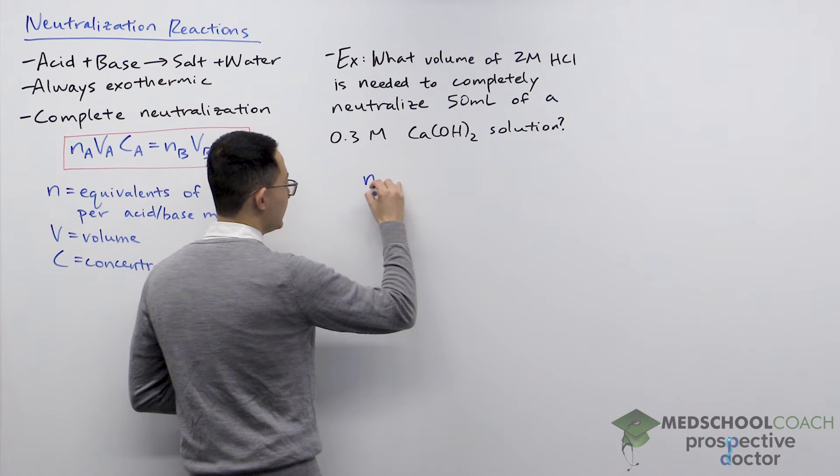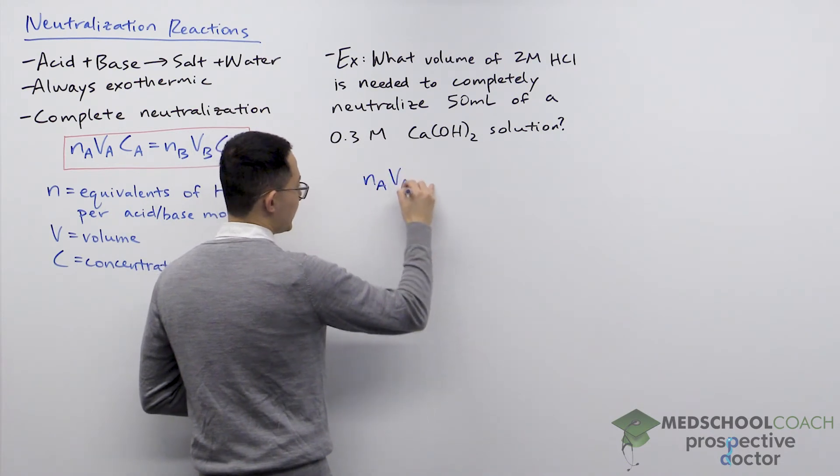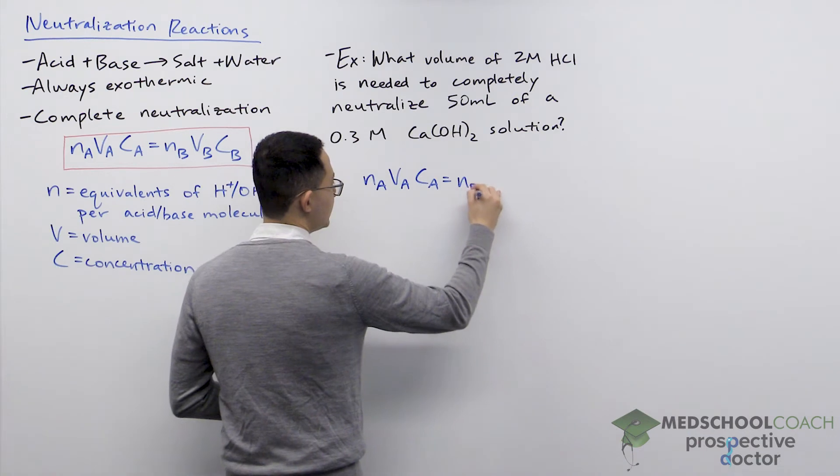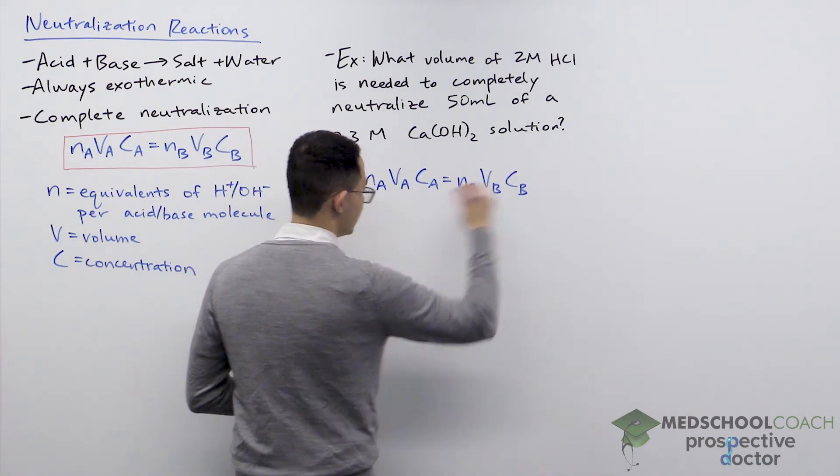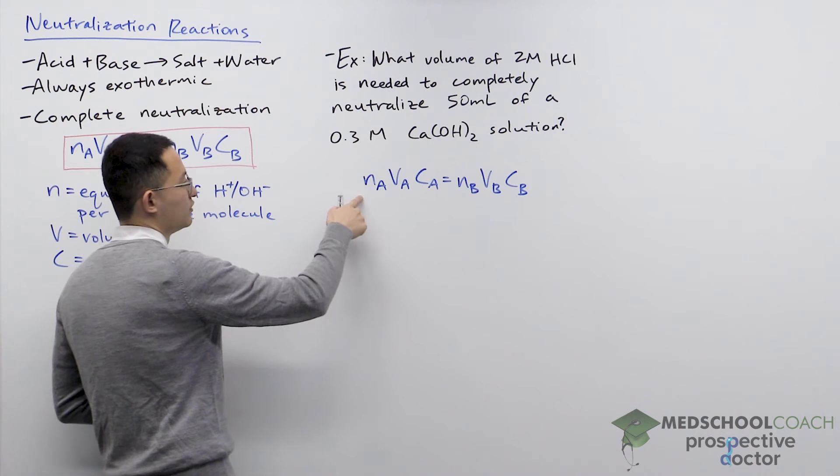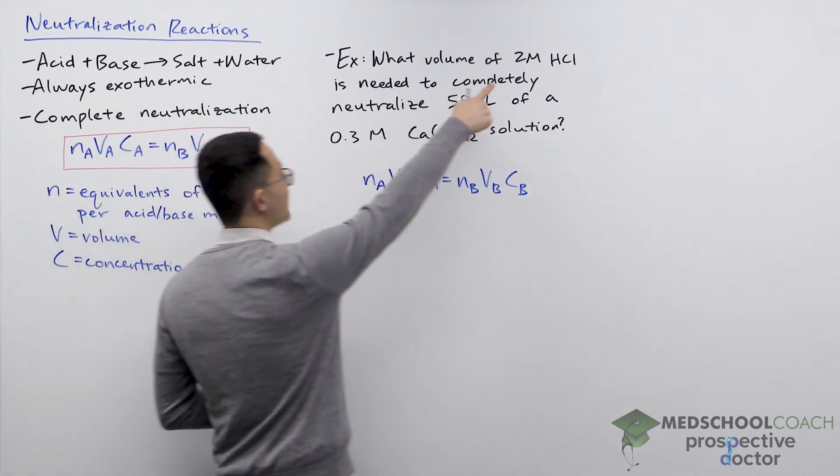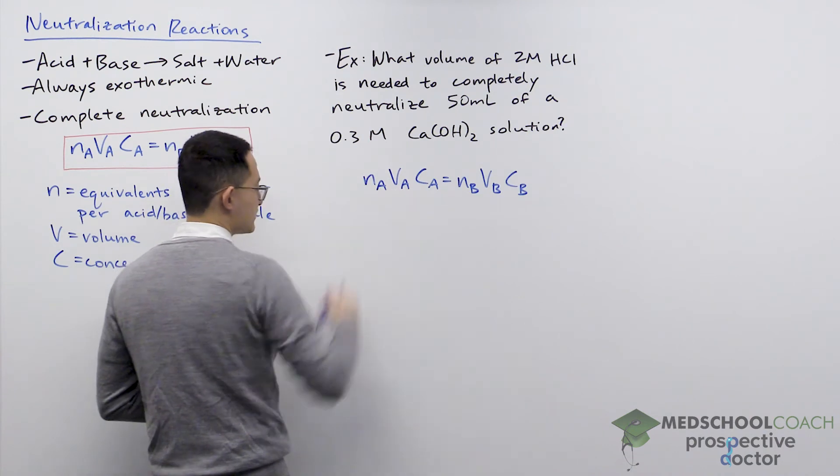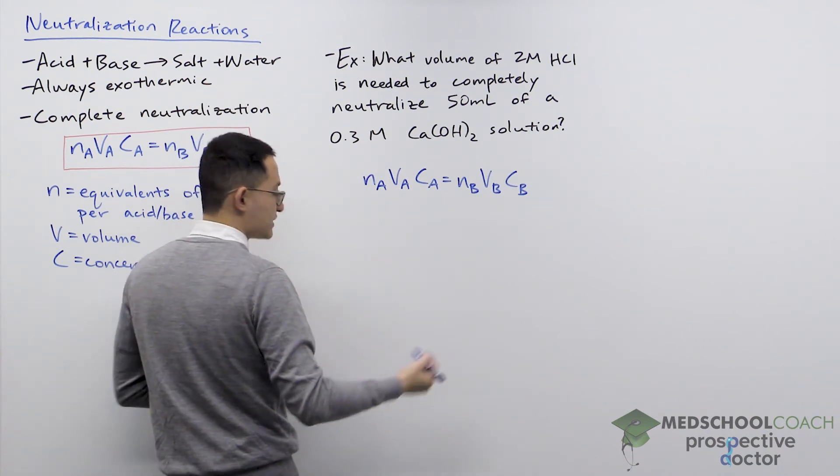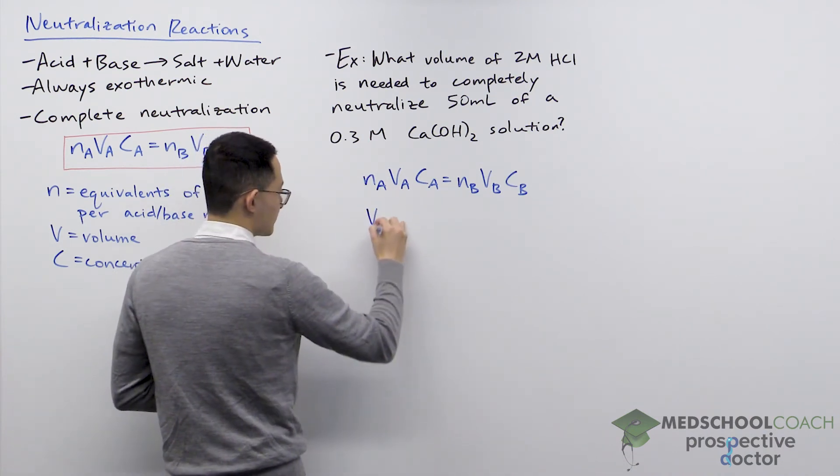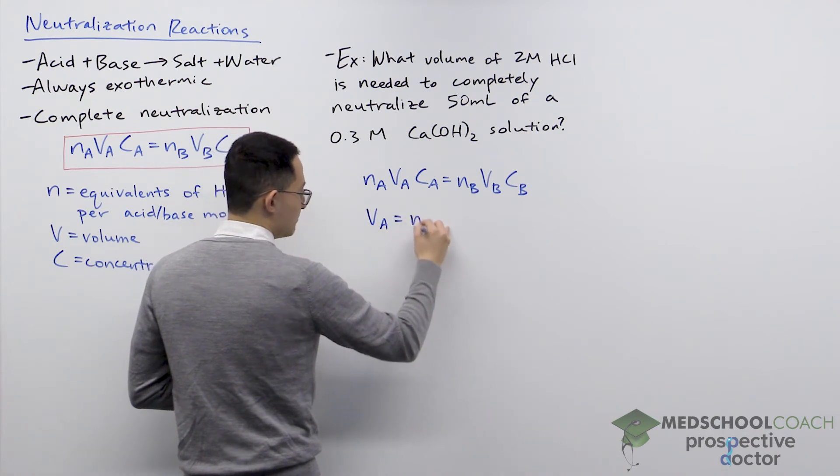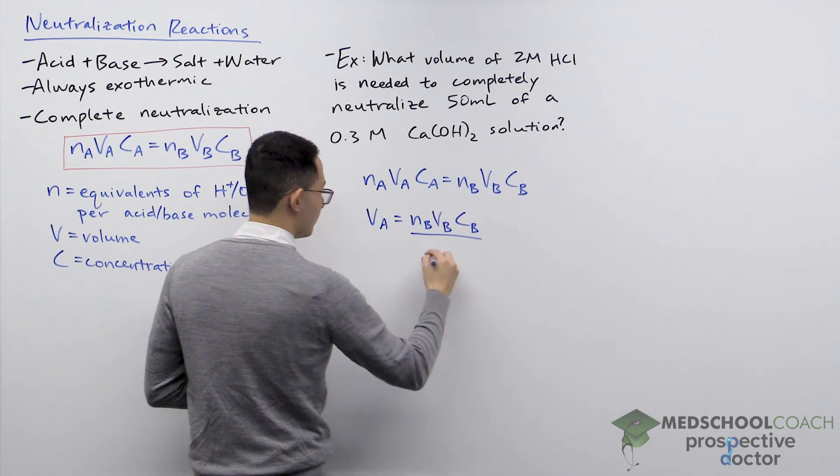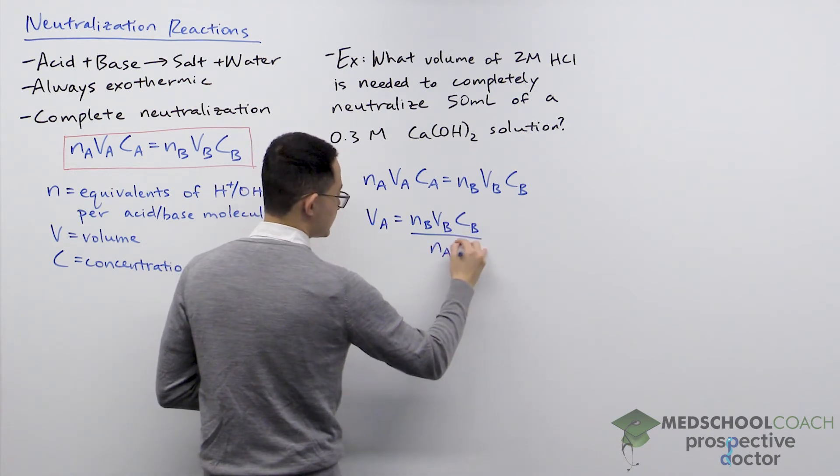NₐVₐCₐ = NᵦVᵦCᵦ. So we want to calculate the volume of the acid. We want to solve for Vₐ. Let's rearrange the equation to isolate Vₐ, which will give us Vₐ = NᵦVᵦCᵦ / NₐCₐ.